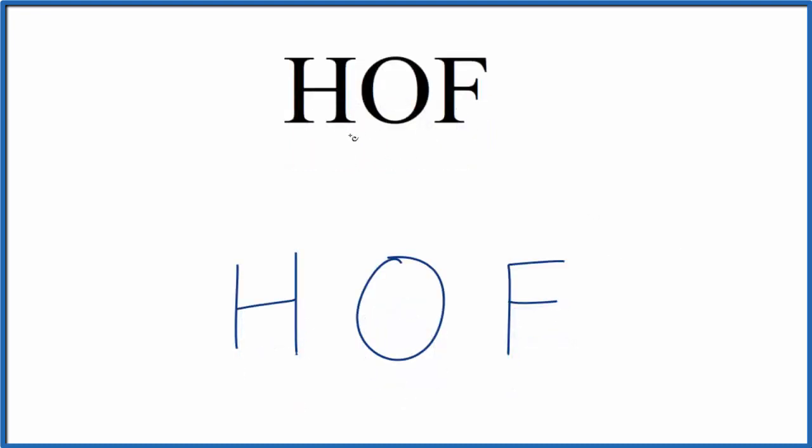For the HOF Lewis structure, we should count the valence electrons. Hydrogen's in group one, it has one. Oxygen in group 16, sometimes called 6A, it'll have six. And then fluorine, that's in group 17, that has seven. So we have a total of 14 valence electrons for the HOF Lewis structure.